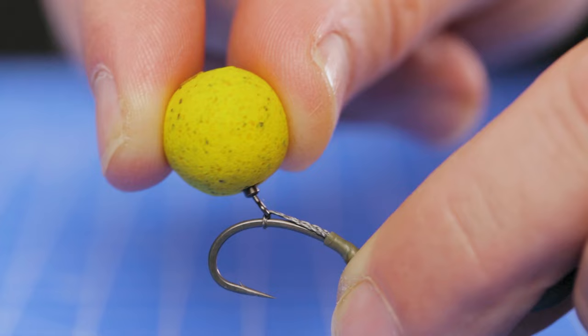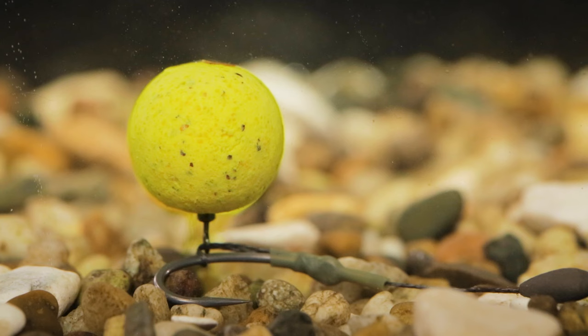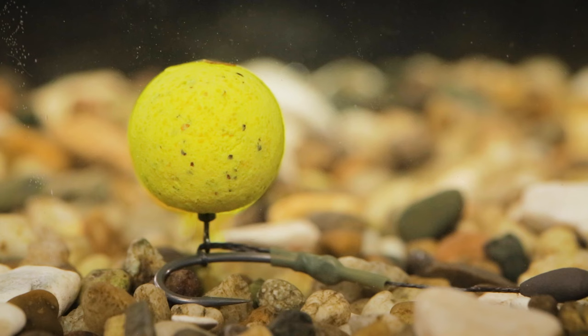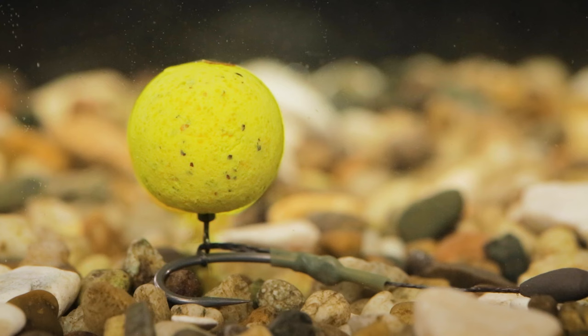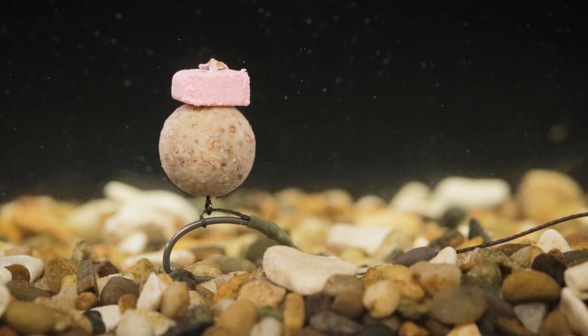Here we can see the mechanics of the slip D where the hook bait will be ejected over the eye helping to secure a good strong hook hold. Here you can see that our 15 mil balance wafter is presented perfectly, it's hovering above that hook laying flat on the lake bed. But alternatively, if you would like to fish this rig so that it's just that little bit more balanced and resting on the hook point, here I've used a cork dust wafter and I've just tipped that off with a little topper just to give that extra little bit of buoyancy.